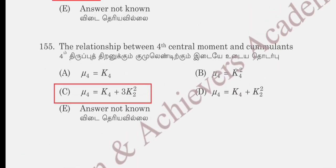It is more of an easy picking problem. Question on the relationship between the 4th central moment and cumulants: option A mu4 = K4, option B mu4 = K4 squared, option C mu4 = K4 + 3K2 squared, option D mu4 = K4 + 3K squared. Option C is the correct answer.